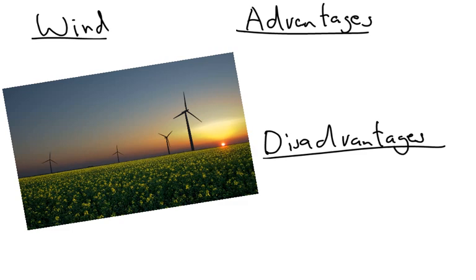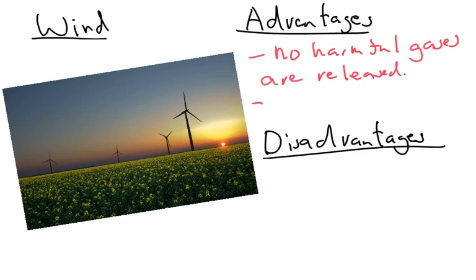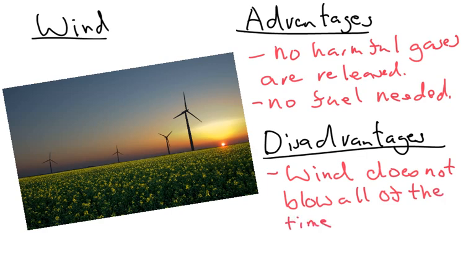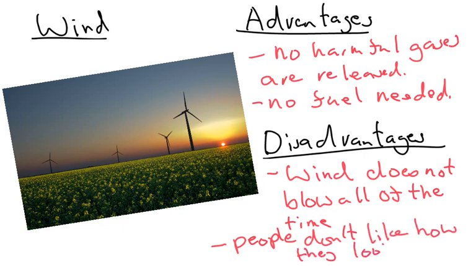Next up we're talking about wind power. The advantages of wind are, again, that no harmful gases are released and it doesn't need any fuel. The disadvantages: the wind doesn't blow all of the time, and also some people don't like the way that they look — they think that they can spoil the environment.